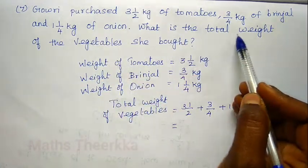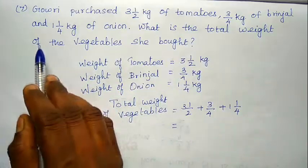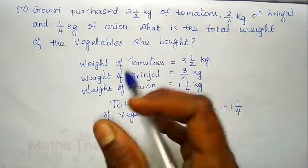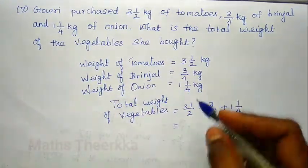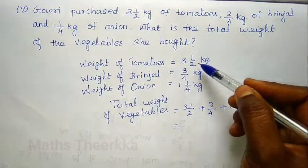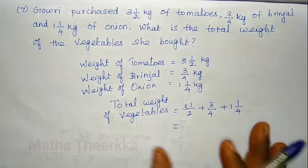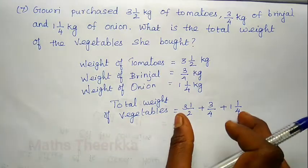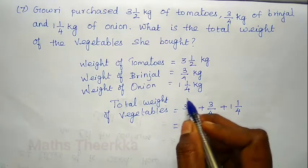We need to add the vegetables she bought. The first vegetable is tomato, then brinjal and onion. So we add the 3 fractions.